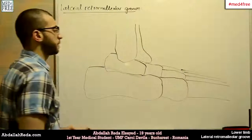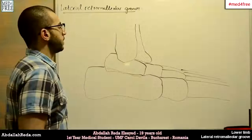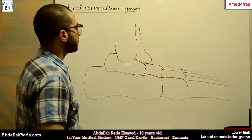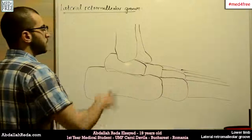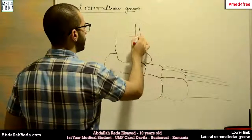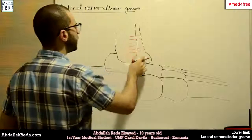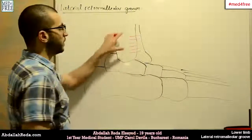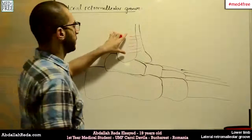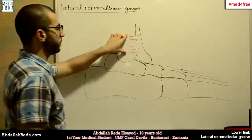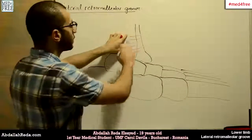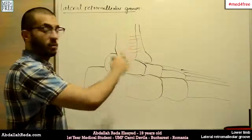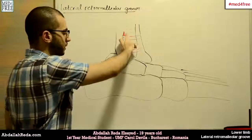On this view we can see a number of different retinaculums. The first one connects between the fibula and the tibia and is called the superior extensor retinaculum, because this retinaculum covers the tendons of the extensor muscles and it's found superiorly.